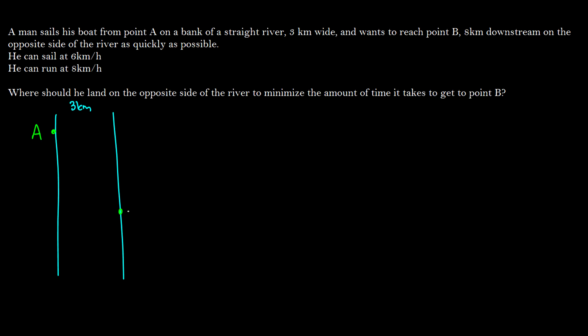So there's some point here, B, and its distance is 8 kilometers. So here's some other information. He can sail at 6 kilometers per hour. So he can cross the stream directly across at 6 kilometers per hour, and he can run at 8 kilometers per hour.